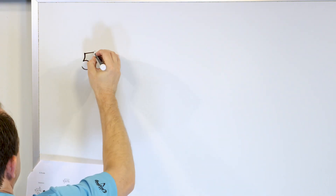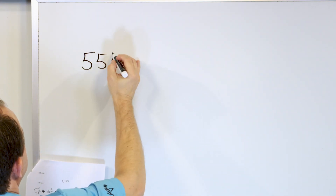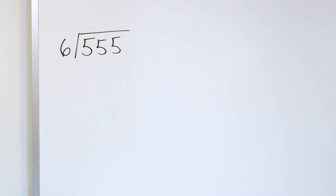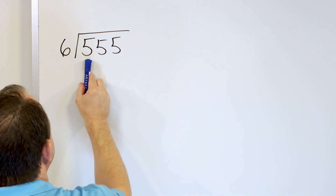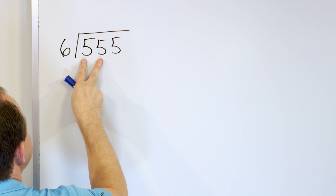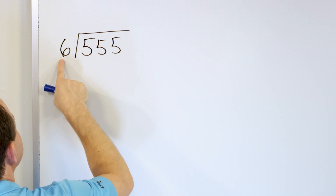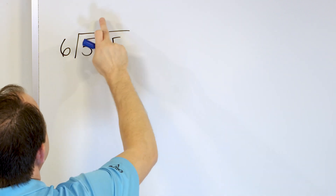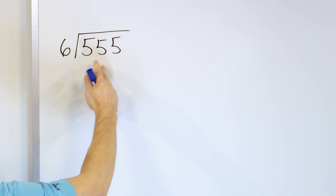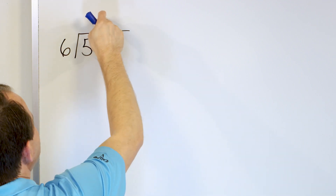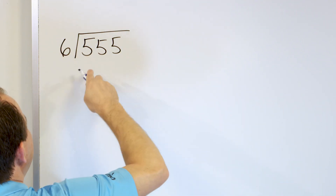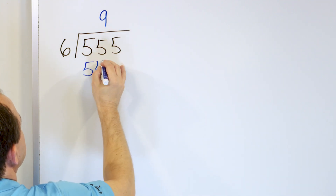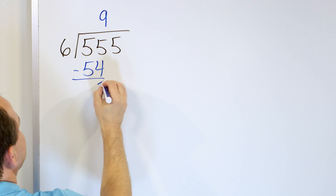Let's take a look at 555 divided by 6. First digit — 6 times 1 is 6, so consider 55 instead. 6 times 5 is 30 — that's way too low. Let's skip ahead: 6 times 10 is 60, so back up to 6 times 9 is 54. That's exactly what fits. So 6 times 9 is 54, I multiply and get 54, and 55 minus 54 is just 1.